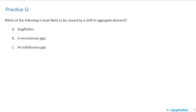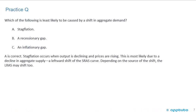One last practice question: which of the following is least likely to be caused by a shift in aggregate demand? A, stagflation; B, a recessionary gap; or C, an inflationary gap. A is correct. Stagflation occurs when output is declining and prices are rising, which is most likely due to a decline in aggregate supply — a leftward shift of the short-run aggregate supply curve. Depending on the source of the shift, the long-run aggregate supply may shift as well.